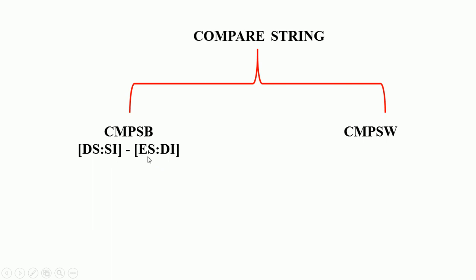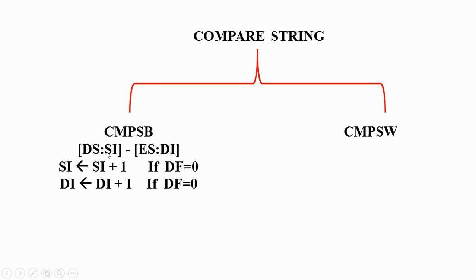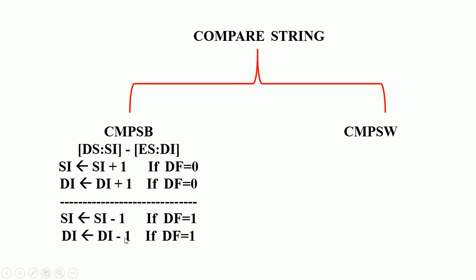After comparison, automatically the content of SI and DI is incremented or decremented by one depending on the status of the direction flag. That is, both are incremented by one if the direction flag is reset, or decremented by one if the direction flag is set.